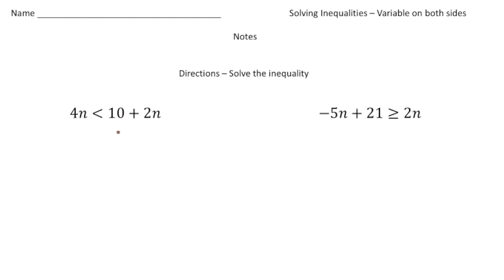Our goal is to get this one variable by itself. So I'm going to actually take away 2n from both sides. That's the move, because all I'm doing is just adding a negative 2n to both sides. When I do that, notice how these cancel out, and that's the point of that move - to eliminate one of the variables. But now we have 4n minus 2n, which is 2n, is less than 10.